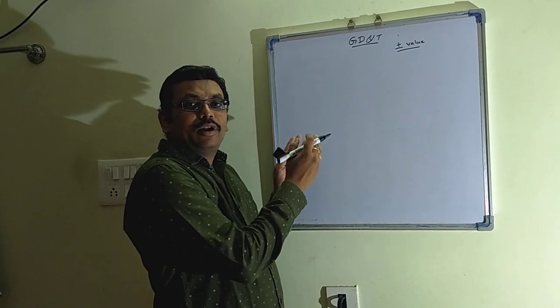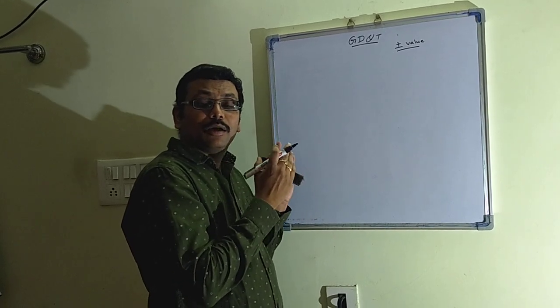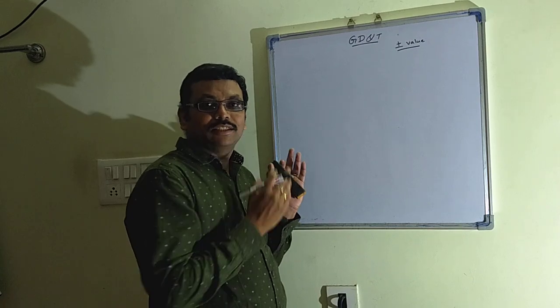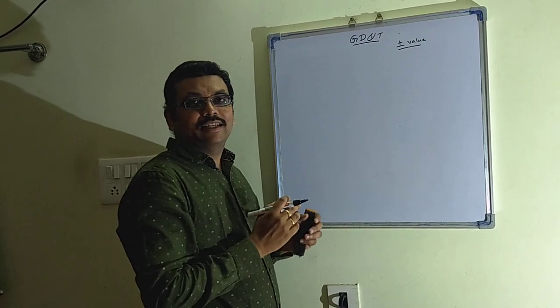For designing a product we need some dimensions - how much of a particular component should be for the usage. For that we use GD&T.